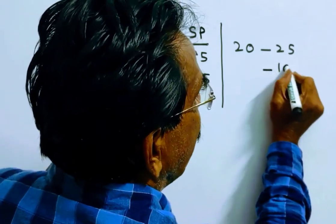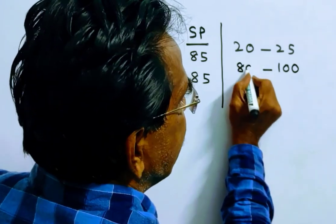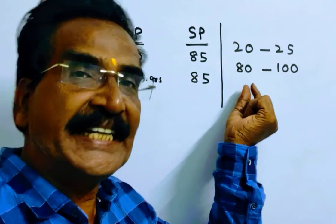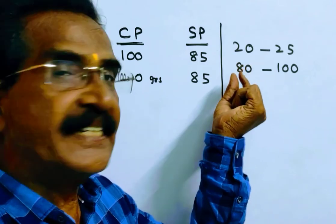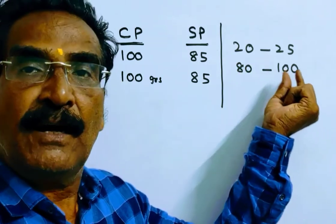So, for 25 is 100, for 20 is 80. So, now he is weighing 80 grams instead of 100 grams.